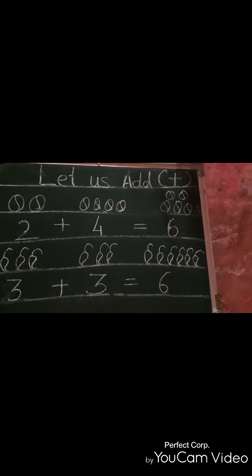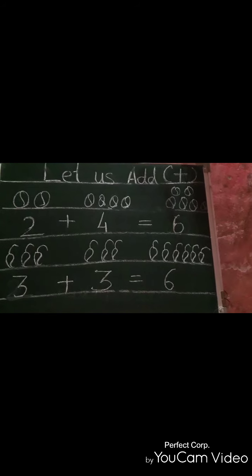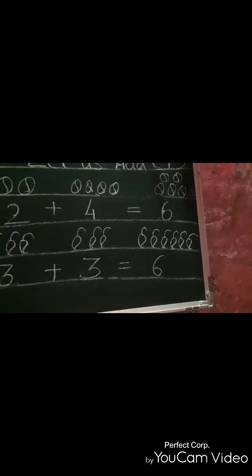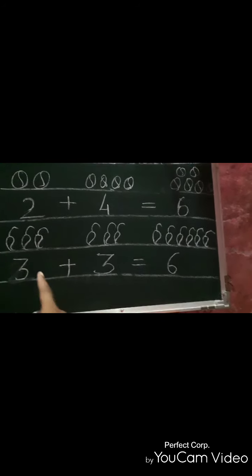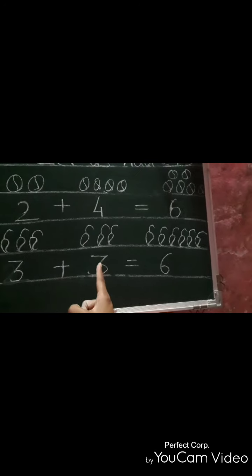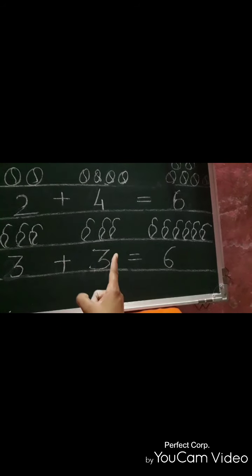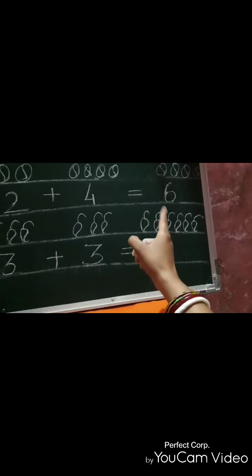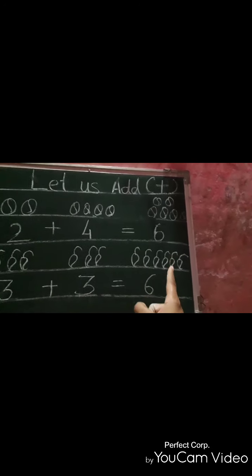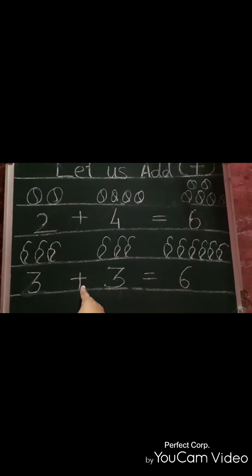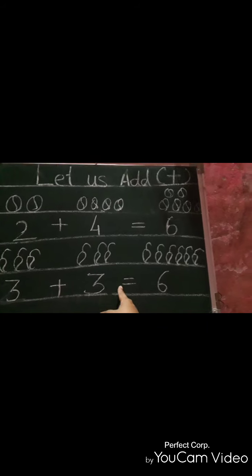Now look at the next picture. At two places I drew mangoes, and on the right side also I drew mangoes. In one place I drew three mangoes, and in another place I also drew three mangoes. When we keep these mangoes and those mangoes at one place, we get an increased quantity. This whole process of keeping things together is called addition, and for addition we use the plus sign and the equal sign.